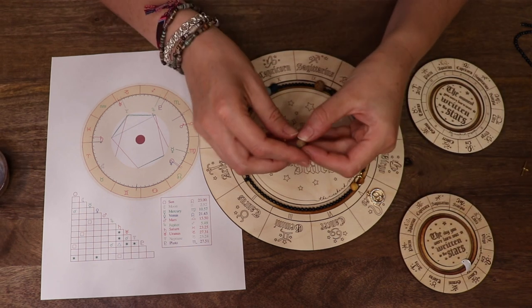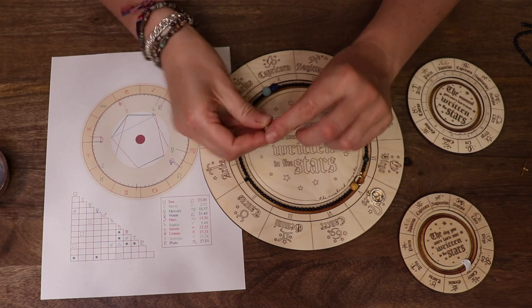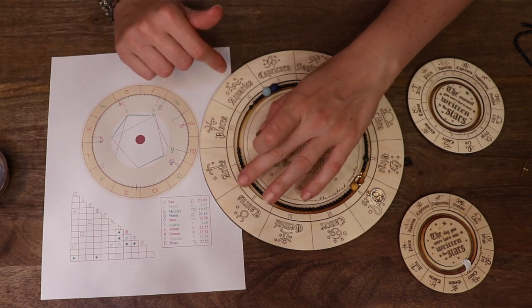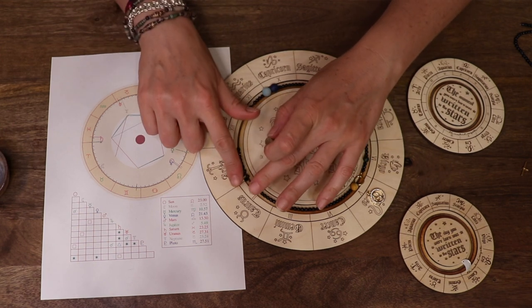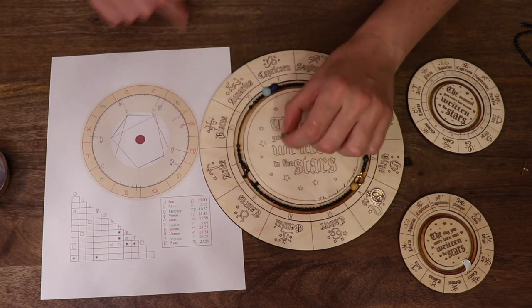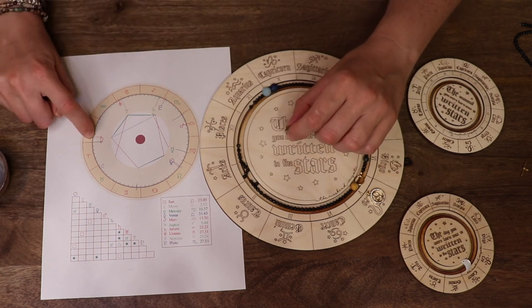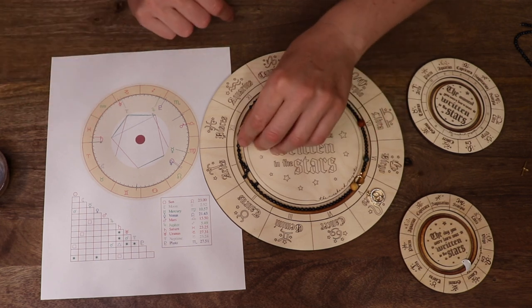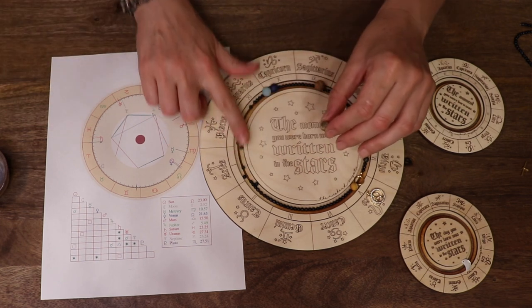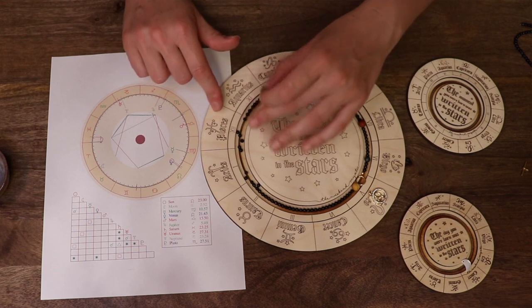And then last but not least we have lovely Saturn. This beautiful picture jasper. And Saturn is in Pisces, about 7 degrees away from Aries.